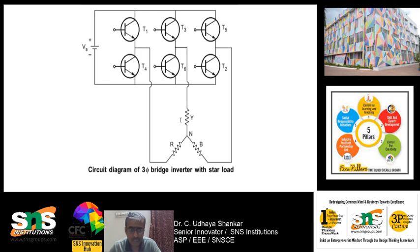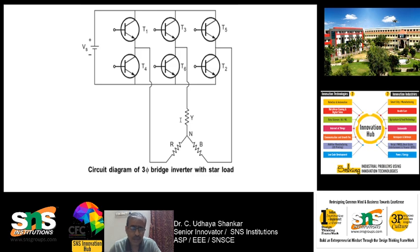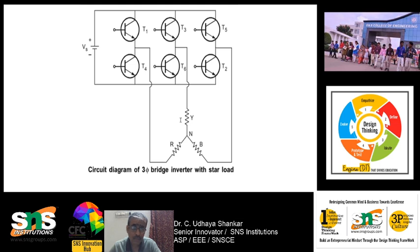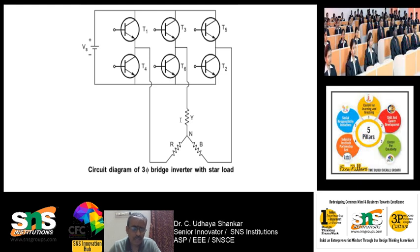Above one kilowatt or 1.5 kilowatts, normally a three-phase inverter is preferred instead of a single-phase inverter, because with a single-phase inverter the torque ripples become very high for high-power applications and the quality of output is reduced. The three-phase inverter uses six transistors.